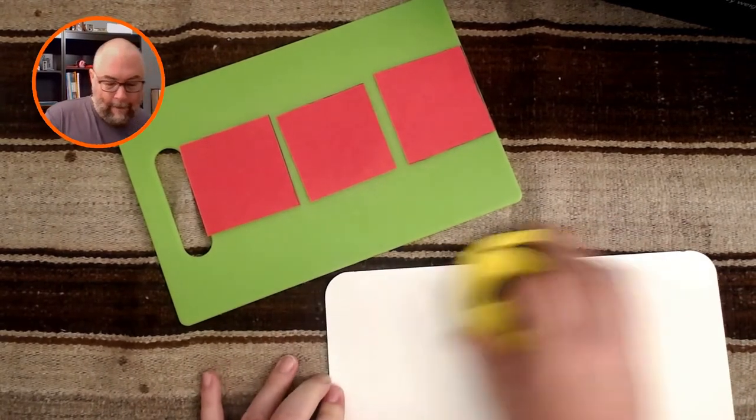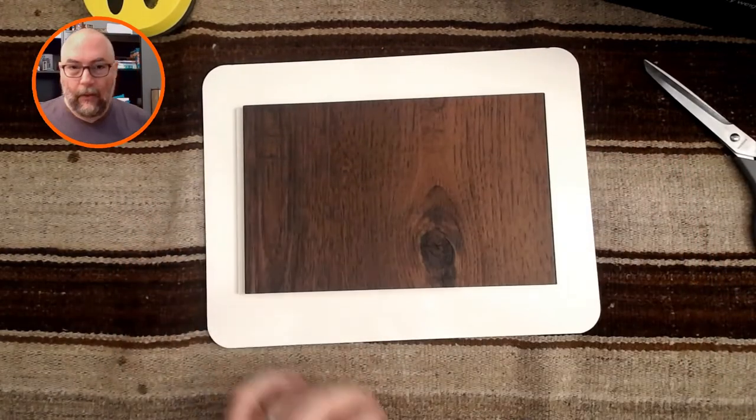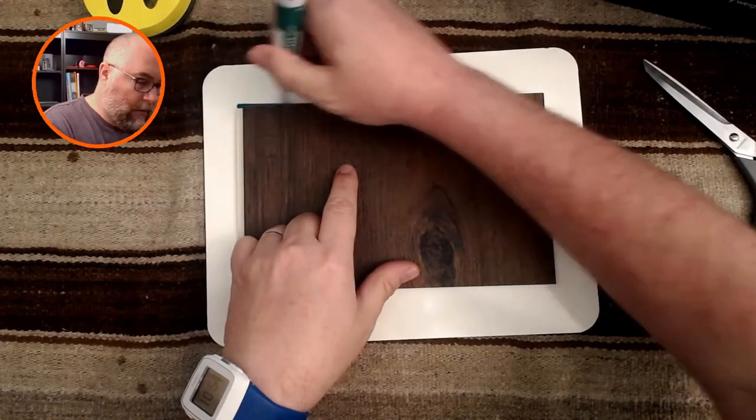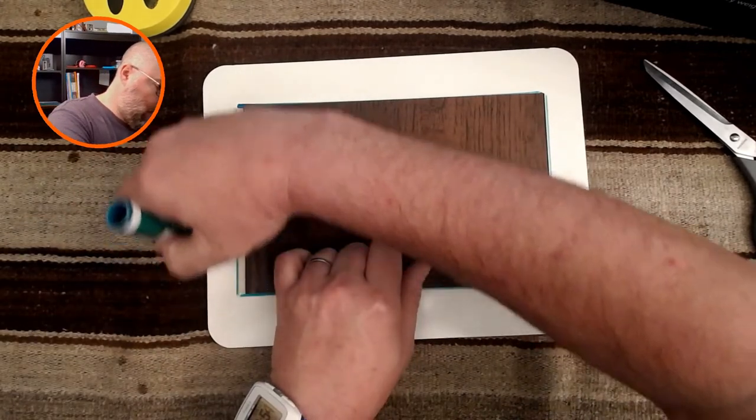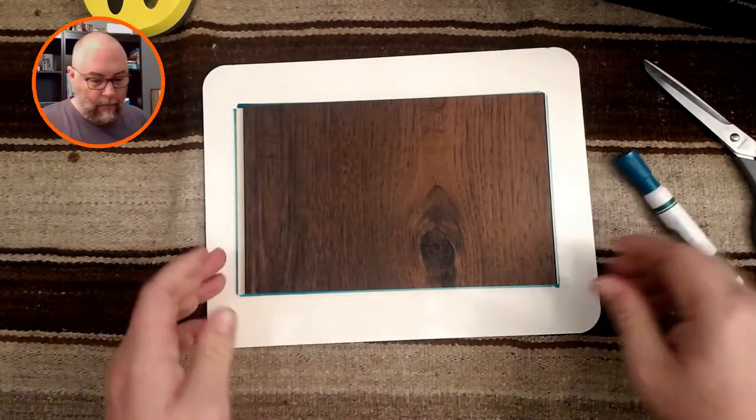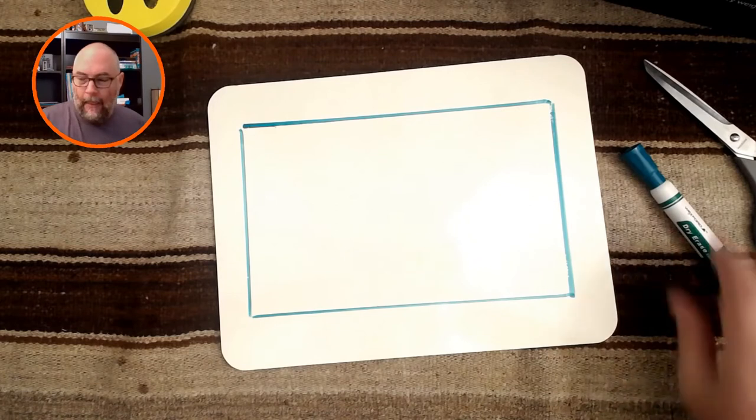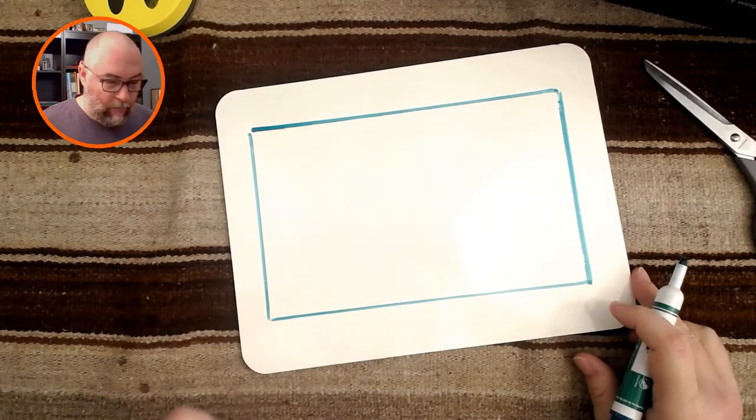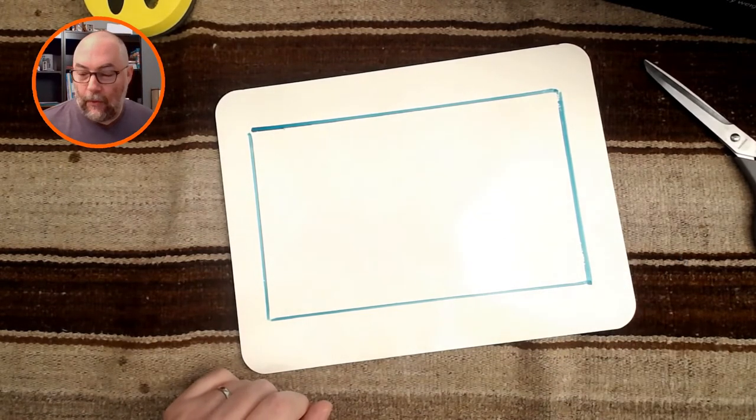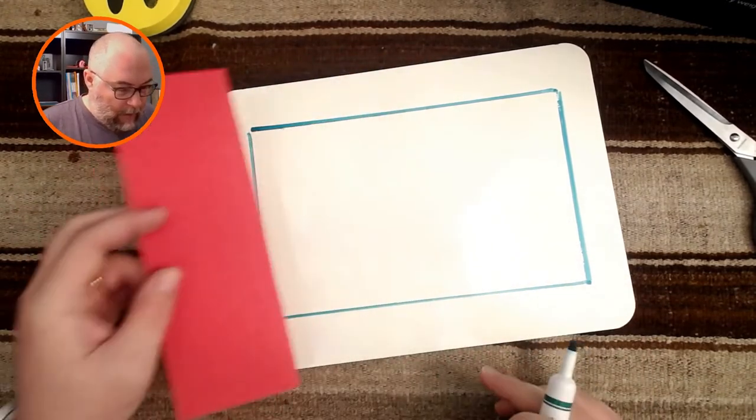So three equal pieces is called thirds. Now, let's have a look at something else. How about I take a rectangle? I'm going to use this to make my rectangle and draw around it. There's my rectangle.